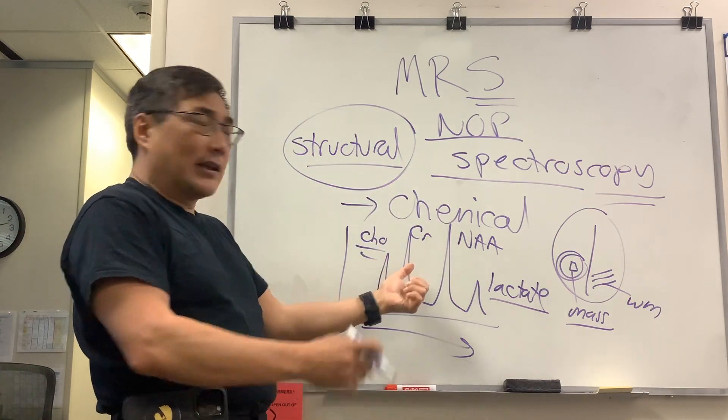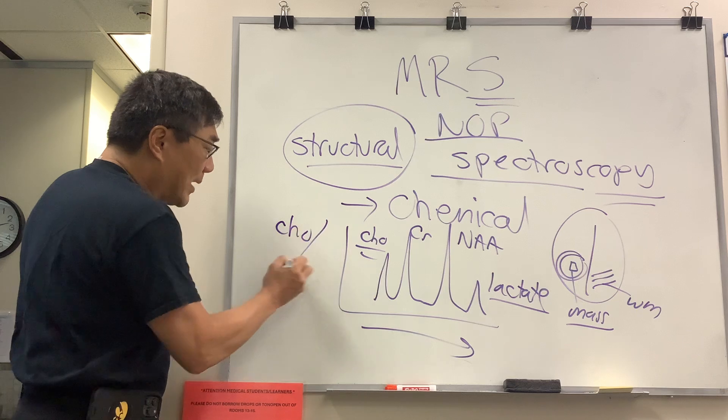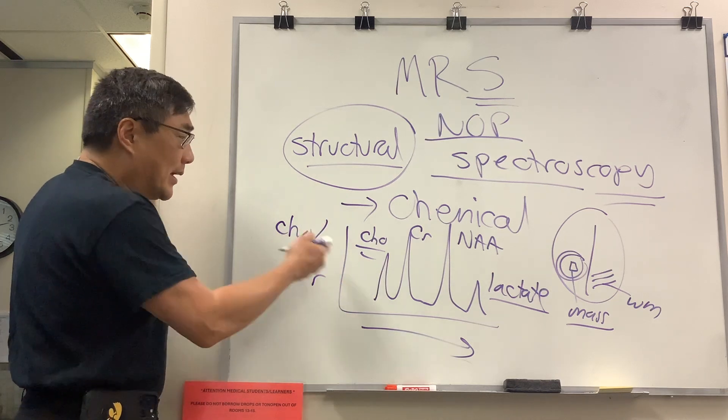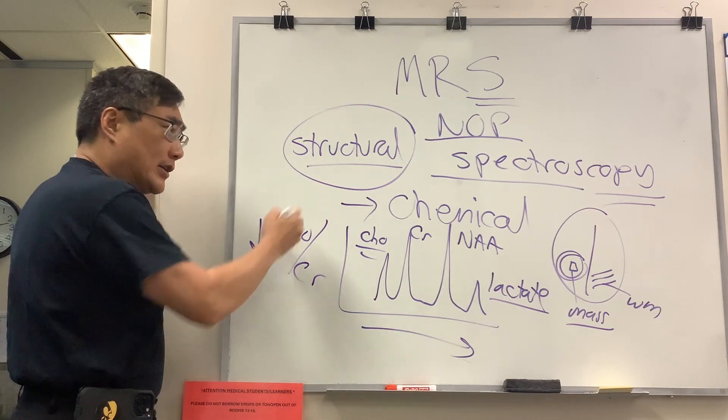And then the ratio between the choline and the creatinine, which is the membrane against metabolism, might be decreased or increased.